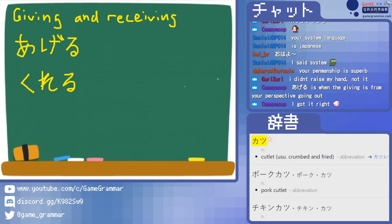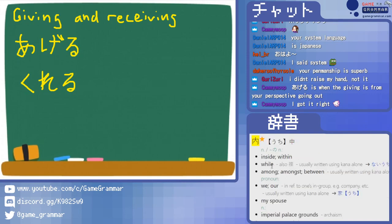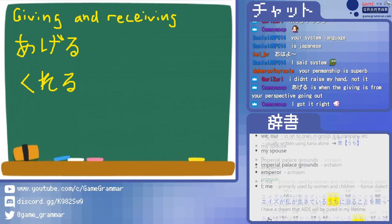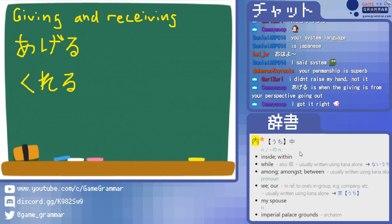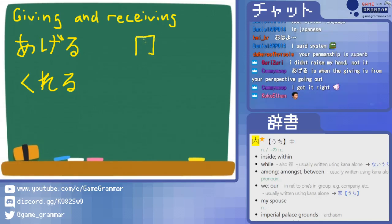To generalize the understanding of ageru and kureru, we're going to talk about a very popular topic: uchi and soto. These are two words — let's put them in the dictionary real quick. Uchi generally means 'inside,' 'within,' 'among.' Soto is the opposite — 'outside.' We'll focus mostly on the inside/within definition for uchi.